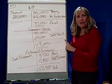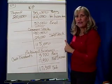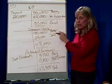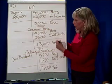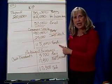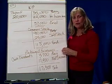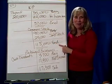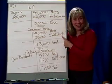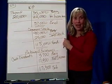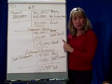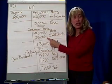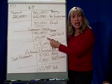The second account to look at is common stock. Common stock has a beginning balance and an ending balance, both credits. Just looking at this account, you can see it increased. The only way common stock increases is if you sell some stock, and if you sell stock, you usually get cash. So we're going to show $25,000 as a cash inflow because we sold stock.